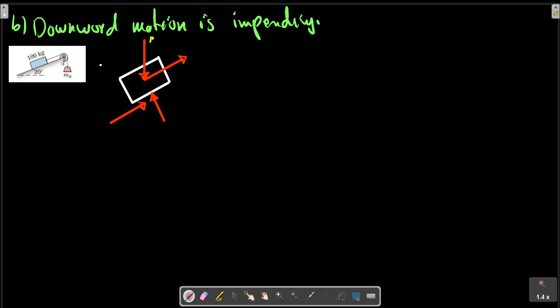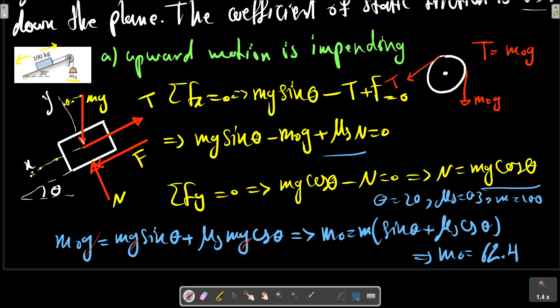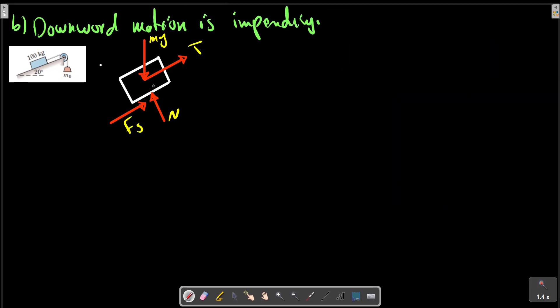We have mg, T, N, and Fs. In the previous assumption, the Fs was in the direction opposite of the motion. In this case we have the same interpretation for Fs. We choose the coordinate in this direction: theta and x. Sigma Fx equals zero.